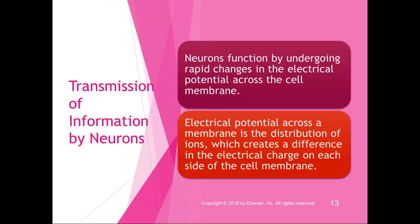We talked about the physical characteristics of neurons and now we're going to talk about the electrical characteristics and neurochemical aspects. Neurons have a unique ability to undergo rapid changes in the electrical potential across the cell membrane, and that is key to a neuron's function.